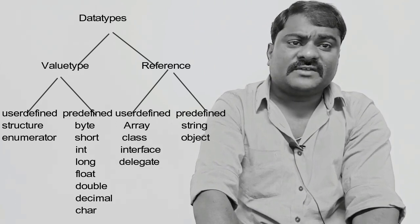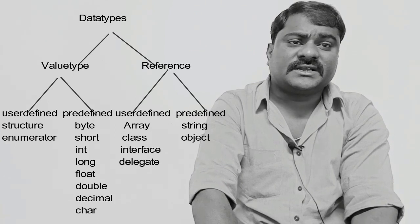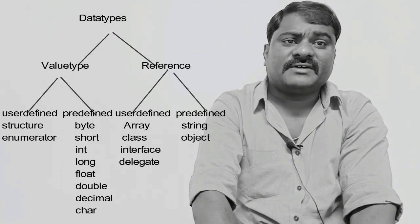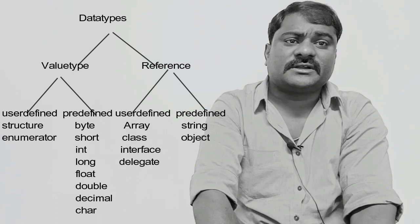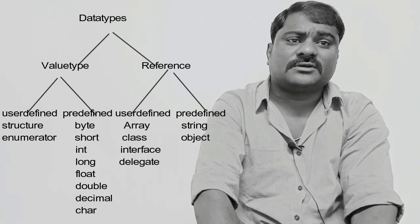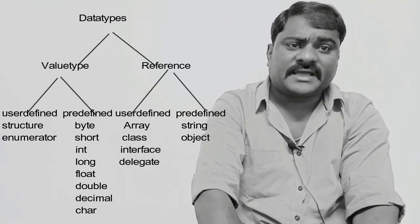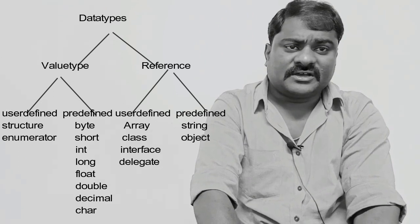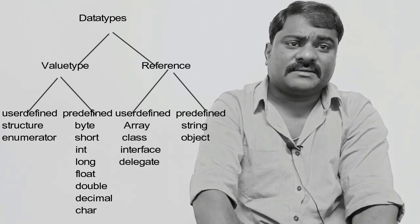User defined value type data types are structures and enumerators. Predefined value type data types are byte, short, int, long, float, double, decimal, char, and bool. These all come under predefined value type data types.